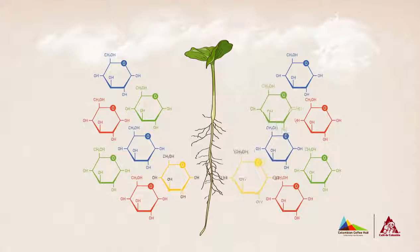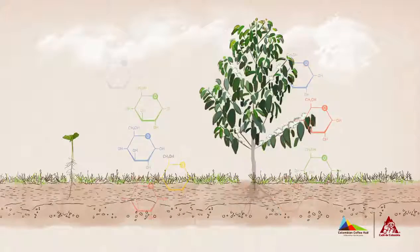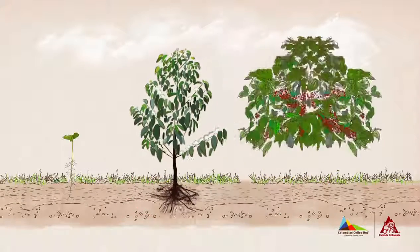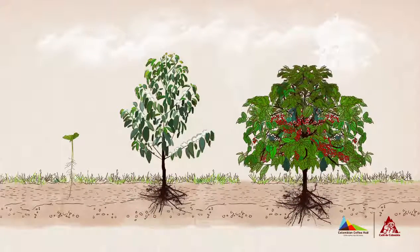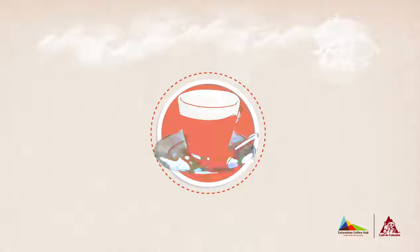In the case of coffee plants, these accumulated sugars promote the development of sweetness in cherries, which is later reflected in the sweet notes of the cup profile.